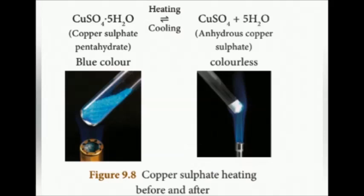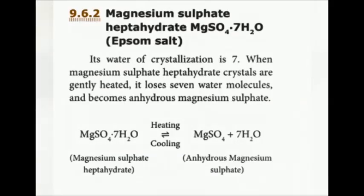CuSO₄·5H₂O is copper sulfate pentahydrate, also called blue vitriol because it is blue in color. If you heat this, it loses all 5 water molecules and becomes CuSO₄ + 5H₂O — this CuSO₄ is anhydrous copper sulfate, which is colorless. Similarly, MgSO₄·7H₂O is Epsom salt (magnesium sulfate heptahydrate). When heated, it loses all 7 water molecules and becomes anhydrous magnesium sulfate MgSO₄; adding water again converts it back to magnesium sulfate heptahydrate.